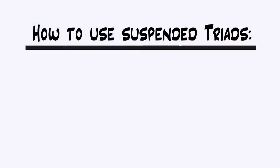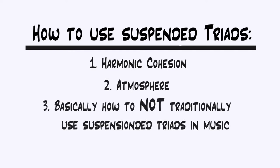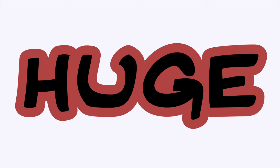In this episode we're going to be discussing the use of suspensions and how the Sus 4 triad is used to effectively create cohesion between chords and help generate the overall atmosphere found within this theme. I personally find the Sus 4 triad to be a huge part of this theme, but before I show you just how important it is, let's talk about what a suspension is.